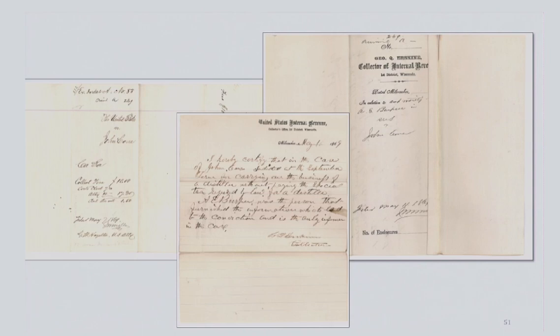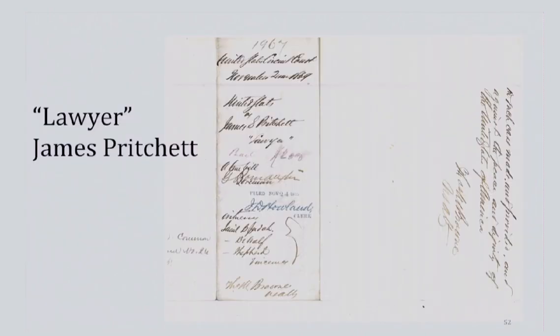The United States District Court records are littered with people accused of not paying taxes or obtaining the proper licenses during this period. Here is an example from the District Court in Milwaukee where John Cohn was also accused of selling liquor without paying taxes. This case includes an affidavit from the collector of internal revenue in the 1st District of Wisconsin, which oversaw Milwaukee.